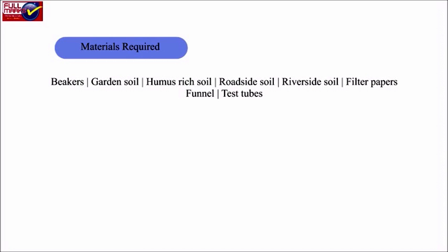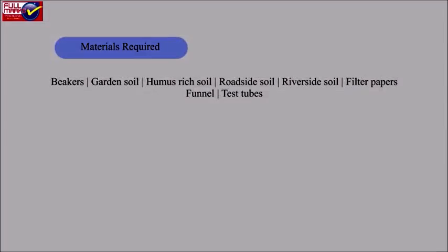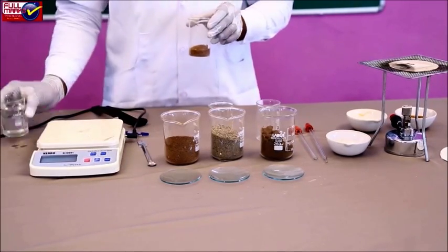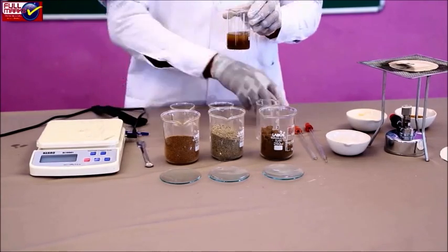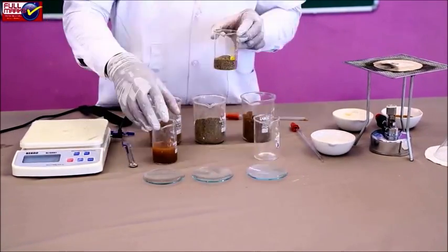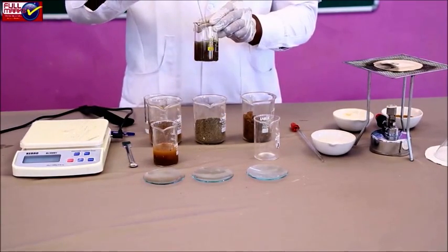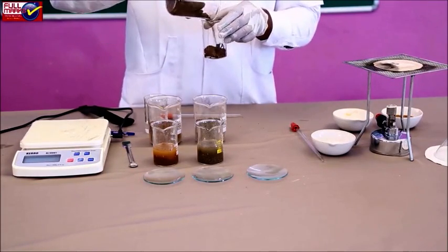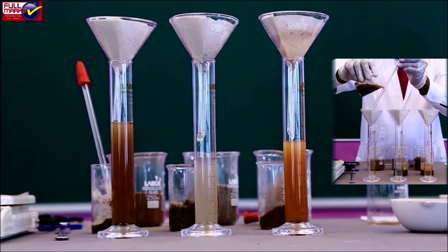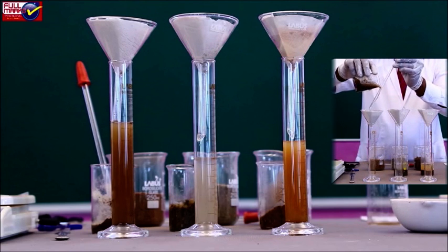Materials required: beakers, garden soil, humus-rich soil, roadside soil, riverside soil, filter papers, funnel, test tubes. Procedure for making soil solution: Take garden soil and dissolve it into a beaker containing water to make soil solution. Repeat the above procedure for other soil samples. Take a funnel, place a filter paper in it, and keep it on a test tube. Take garden soil solution and filter it through the filter paper, collecting the filtrate in a test tube. Repeat the same procedure for other samples with fresh filter papers.